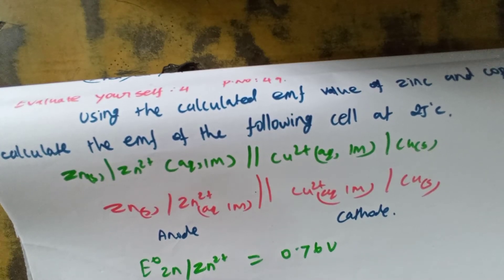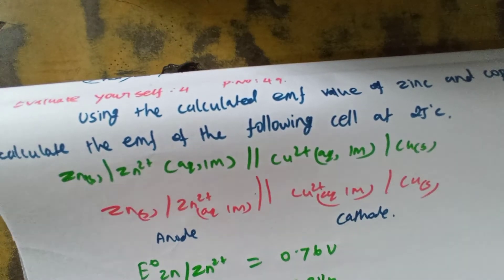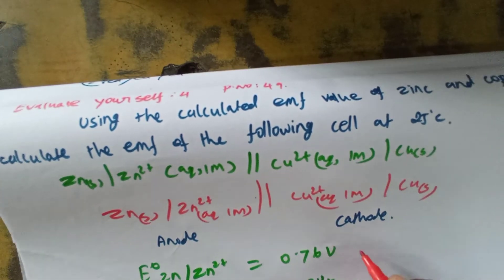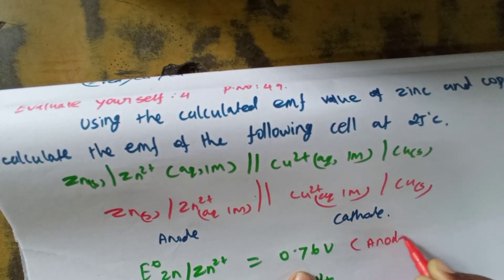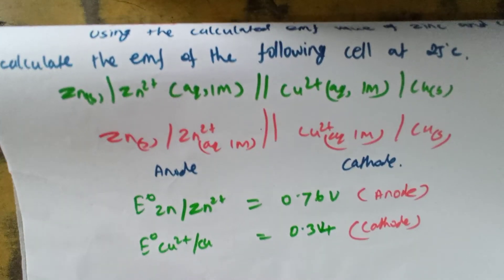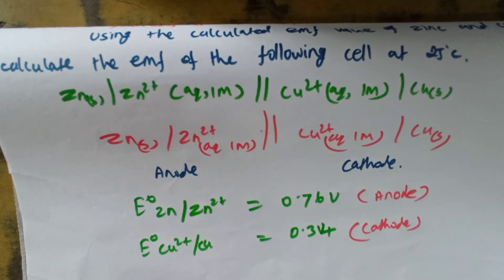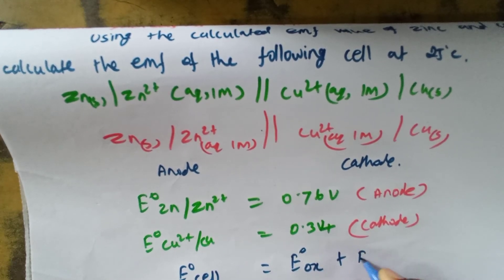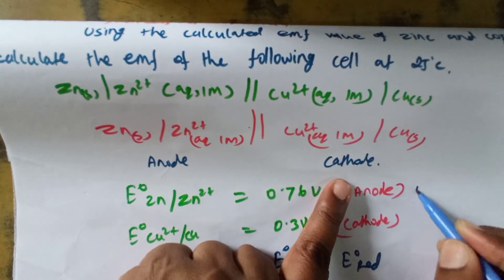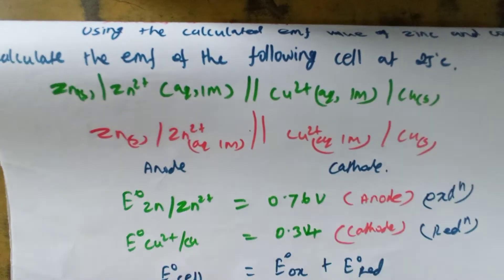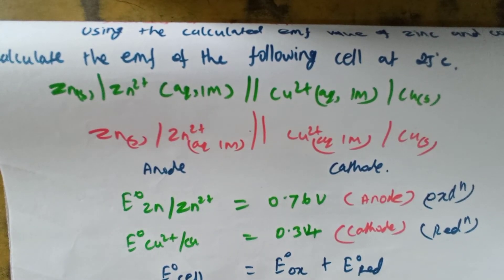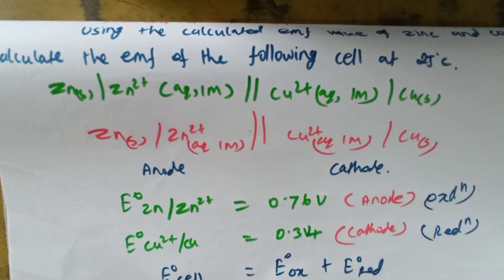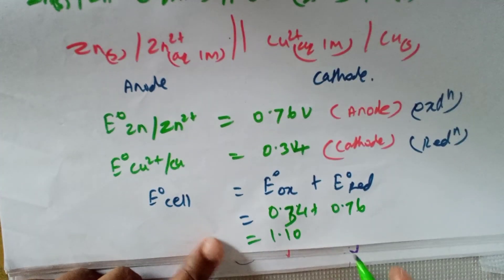This is the anode and this is for the cathode. Now we write the value: E_cell is equal to E_oxidation plus E_reduction. So the calculated equal value is 0.34 plus 0.76 is equal to 1.10 volt.